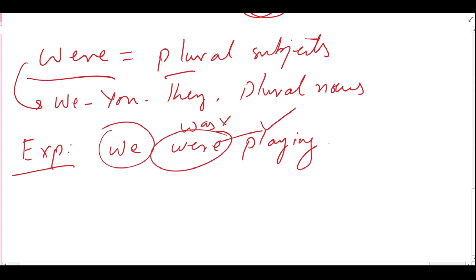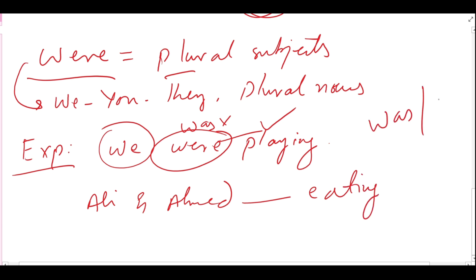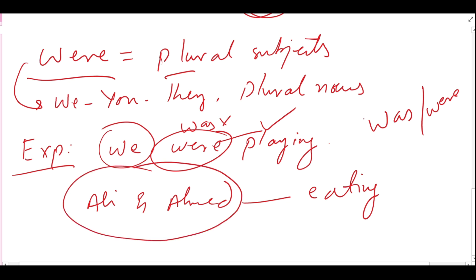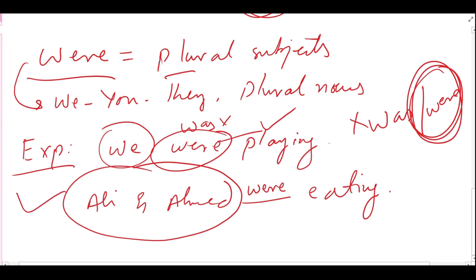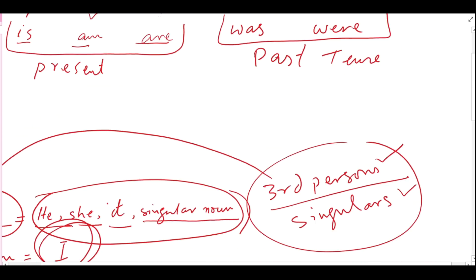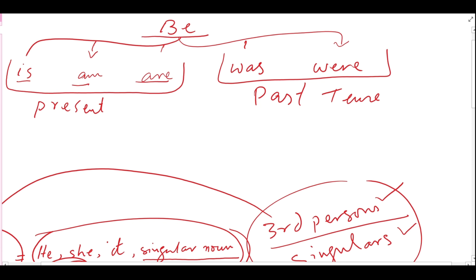We can also say 'Ali and Ahmad were eating.' Here Ali and Ahmad is a plural noun, so we use were, not was. So it should be: 'Ali and Ahmad were eating.' This was the use of to-be verbs: is, am, are, was, and were. Remember which subjects each is used with — is/am/are for the present and was/were for the past.